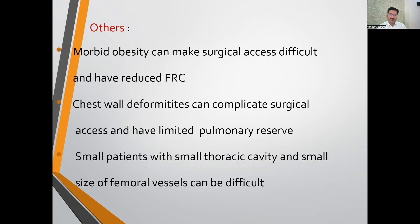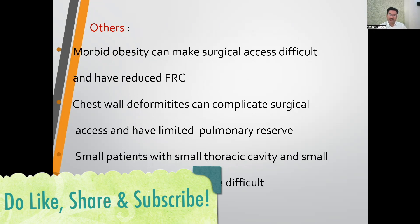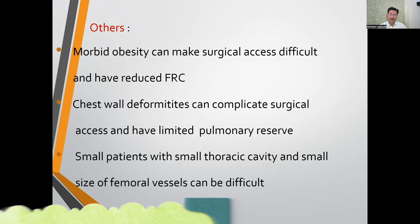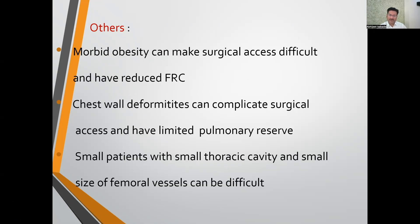Regarding case-related factors: very obese patients, especially females with large breasts, present difficulty in surgical access, and obesity creates anesthesia challenges including decreased functional residual capacity. Chest wall deformity patients complicate surgical access and have limited pulmonary reserve. Very small patients with a small thoracic cavity also present difficult surgical access, and small femoral vessels — surgeons prefer femoral vessels more than 5 mm — present difficulty in femoral venous cannulation.